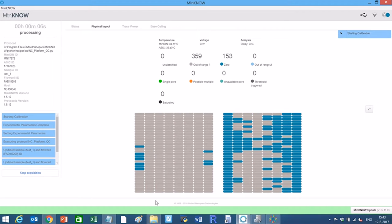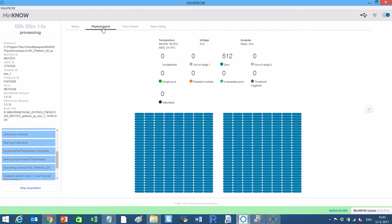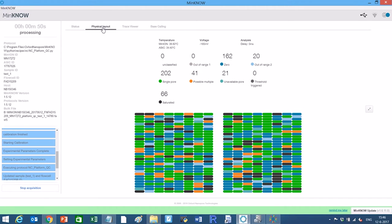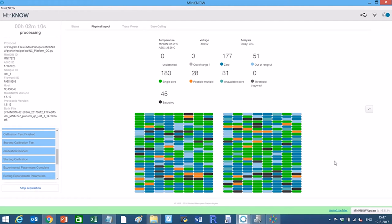Flow cells are shipped with a QC DNA molecule present in the buffer. This molecule produces a distinctive nanopore signal. The MinION software uses this signal to validate the integrity of the nanopore array before use and provides the user with an estimation of the number of simultaneously available channels for the experiment.